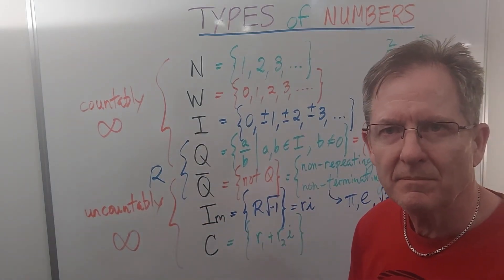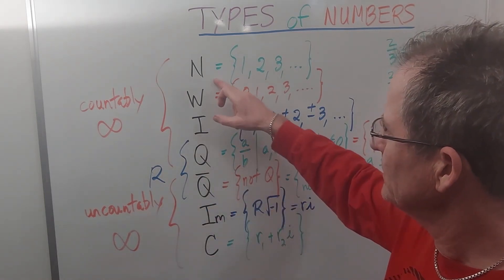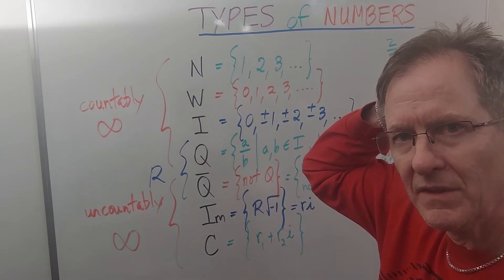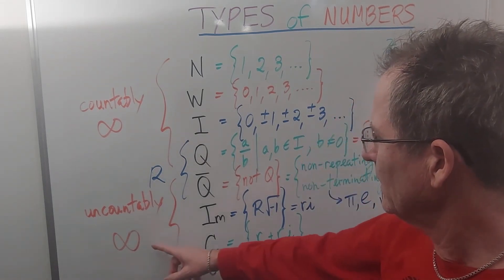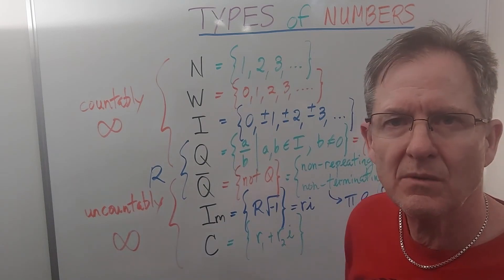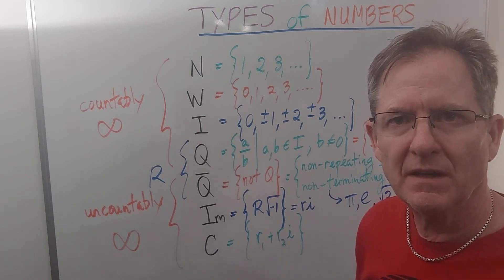If you can make a one-to-one correspondence between the numbers and the natural numbers, or the whole numbers, or even the integers, then they're said to be countable. If not, they're uncountable. So we won't go into all the details, but basically there's different types of infinity.